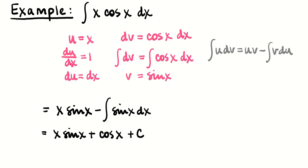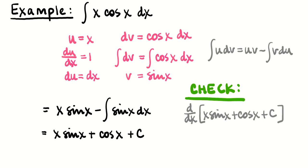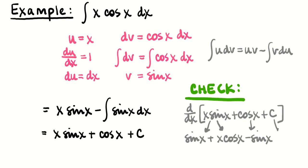At this point, it would be a good idea to check our work. Let's take the derivative of x sine x plus cosine x plus c and see what comes back — hopefully x times cosine x. Using the product rule: take the derivative of x and leave sine x the same, then leave x the same and take the derivative of sine x with respect to x. Then take the derivative of cosine x, which is negative sine x. The sine x and negative sine x cancel, and that leaves x cosine x. So this technique does work.